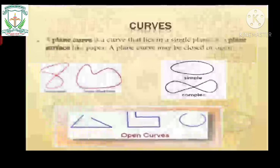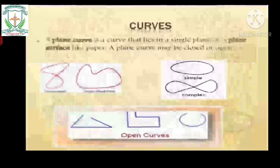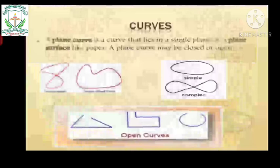Look at the first two figures — closed curve and simple closed curve. A closed curve is one which has no end points and which encloses an area within it. In these figures there is no starting point and ending point; we really can't determine the starting point and the ending point. These types of curves are called closed curves.